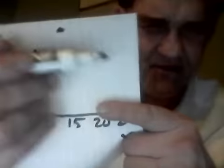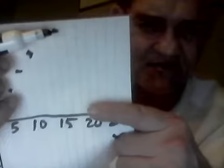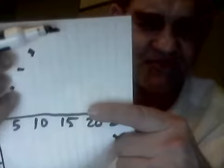What about 15 and 25? Let's go to 15 — 15 is right here, and 25 is right here. 15 and 25. I got 15 right here and I got 25 right here, and there's your dot. 15 and 25.